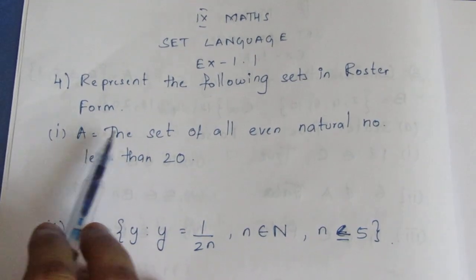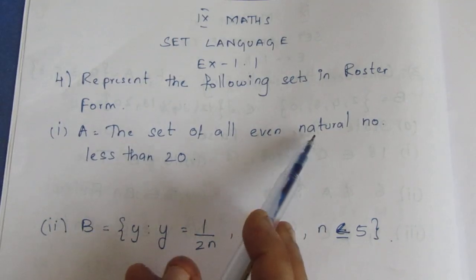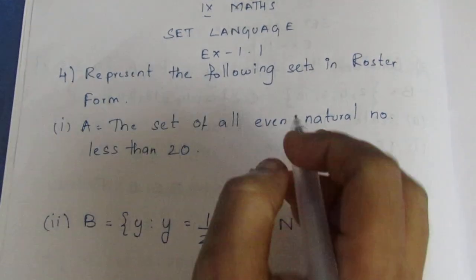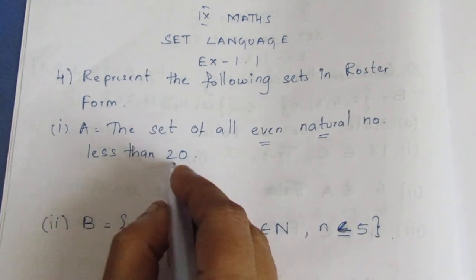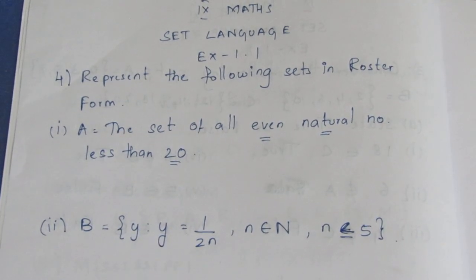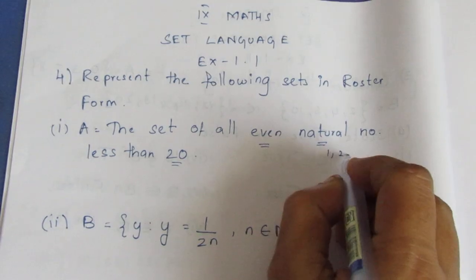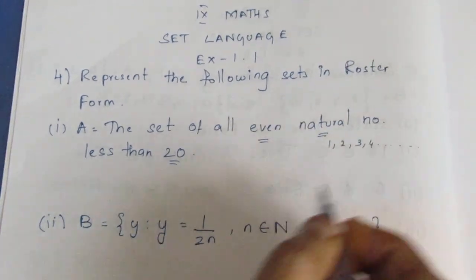The first one: A is equal to a set of all even natural numbers less than 20. Even numbers and natural numbers — 20 is the upper limit, so all the conditions must be met. Even natural numbers from natural numbers: 1, 2, 3, 4 are natural numbers.